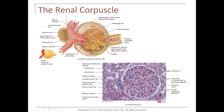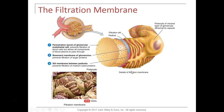The podocytes form the visceral layer of the capsule because they adhere directly to the capillary bed. The parietal layer of Bowman's capsule is the simple squamous cells lining the inside of the capsule. Filtrate is collected between these two layers. The filtration membrane is made of three parts. The endothelium of the capillary is a fenestrated capillary — it has large gaps or holes between the endothelial cells.